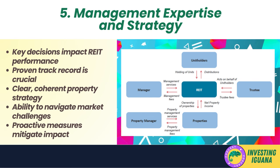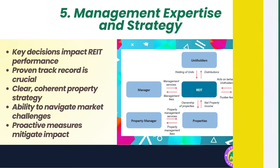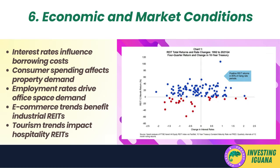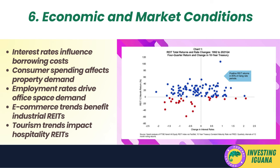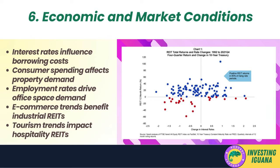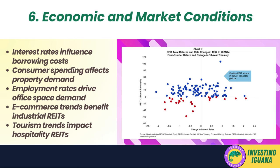In addition to a proven track record, a good management team will have a clear and coherent strategy for acquiring and managing properties, aligned with the REIT's overall investment objectives and risk tolerance. This strategy should outline the types of properties targeted, the regions of focus, financing methods, and the approach to property management. Furthermore, a good management team will be able to navigate market challenges — anticipating volatility in property values and rental income due to economic conditions and interest rates — and take proactive measures such as diversifying the portfolio, securing long-term leases, or maintaining conservative debt levels.